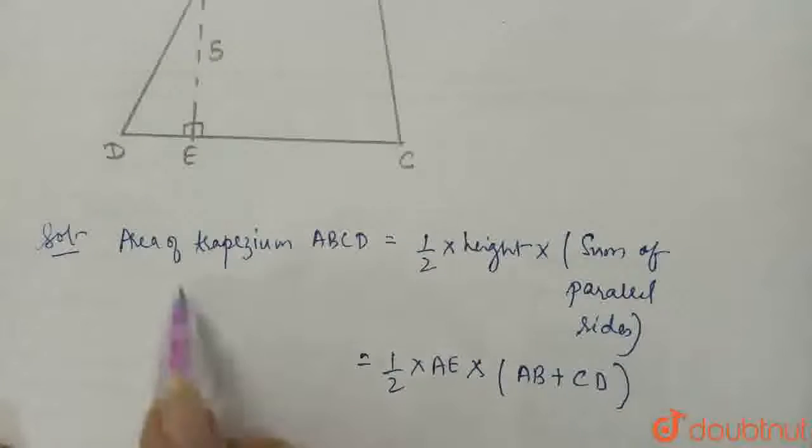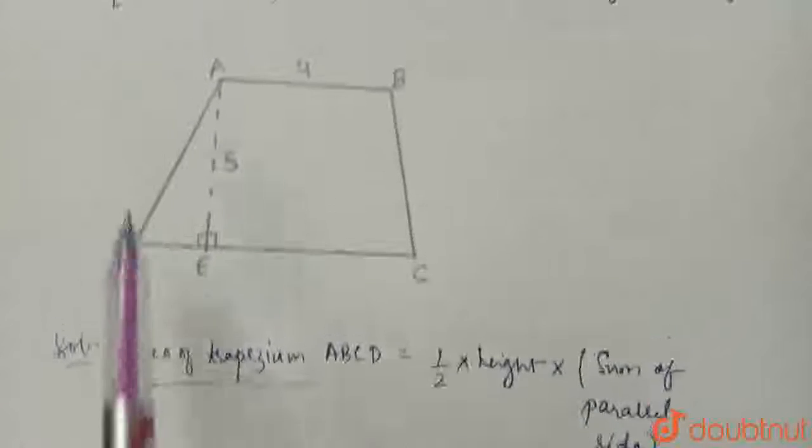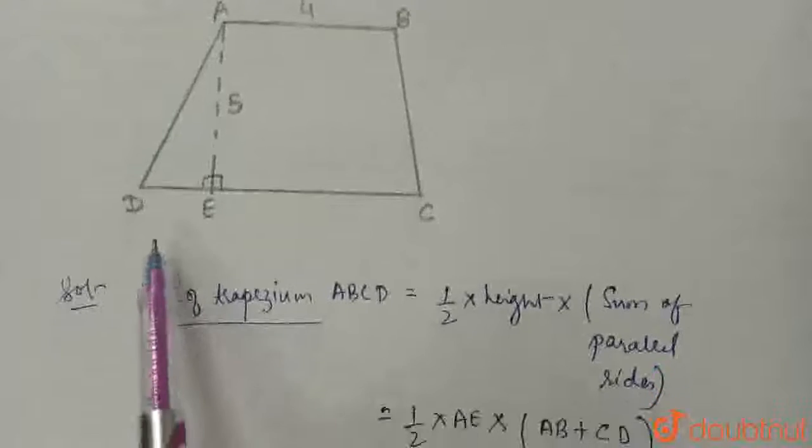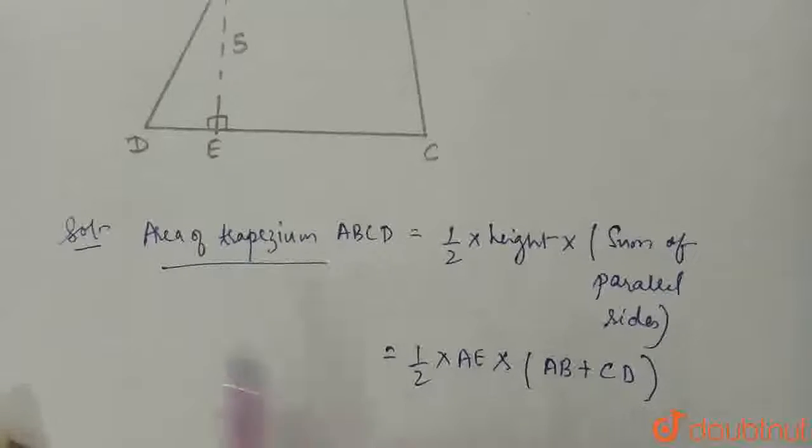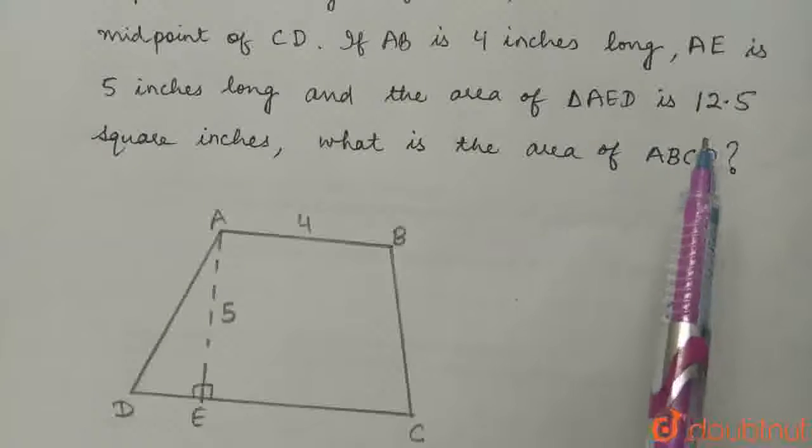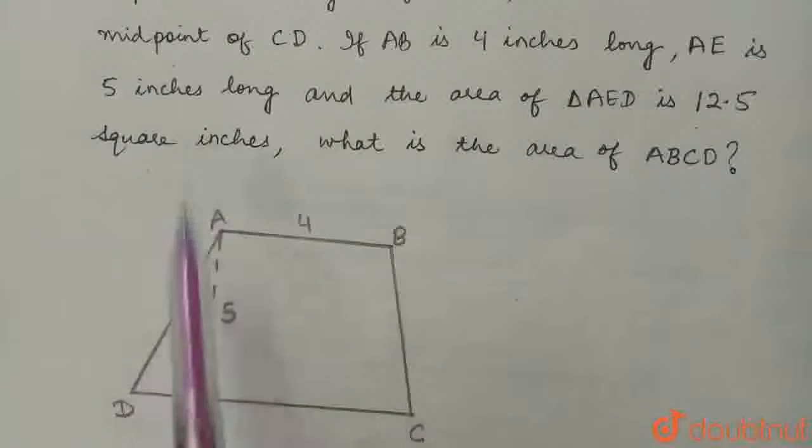This is the formula for the area of a trapezium. We know the length of AB and AE, but we need to calculate CD to find the area. We are also given that the area of triangle AED is 12.5 square inches.